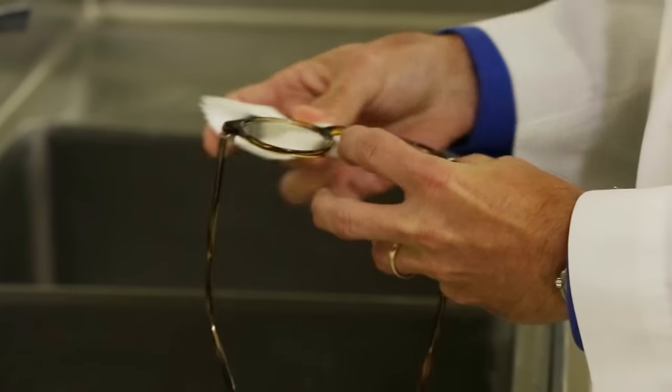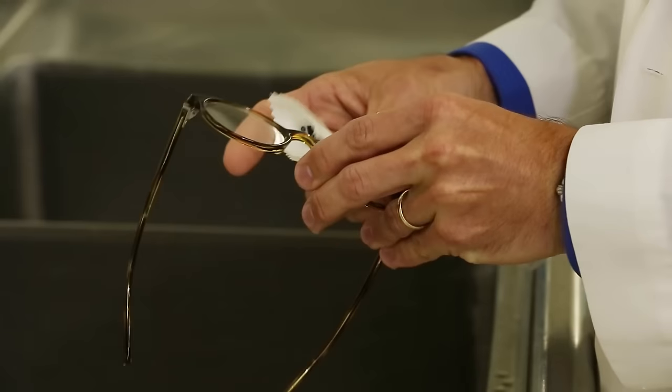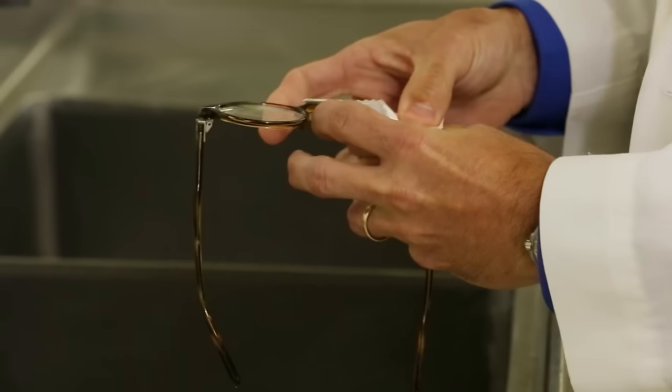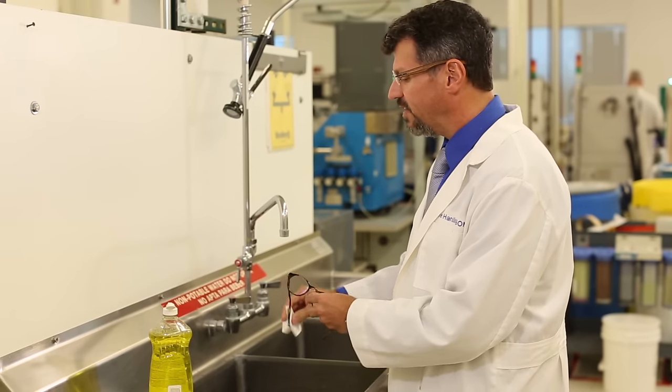What you don't want to use is a paper towel because that's actually got wood fibers in it that can scratch your lenses. And for the same reason you don't want to use your shirt tail because you probably got dirt or dust or something else that could damage your lenses.